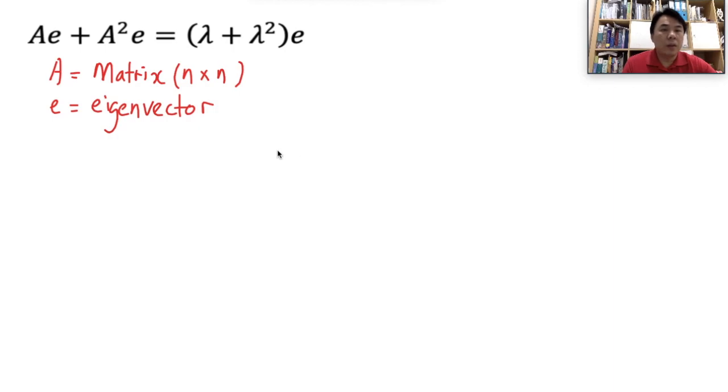Those are its eigenvector. And then now A square is just another matrix by going through the transformations A with A.